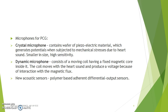While recording PCG, we use a microphone setup. The conversion of heart sounds into electrical signals can be done using a variety of transducers, primarily microphones. We classify microphones into two types. The first is the crystal microphone, which contains a wafer of piezoelectric material that generates potentials when subjected to mechanical stresses due to heart sound. It is very small in size but has high sensitivity. The second is the dynamic microphone, which consists of a moving coil with a fixed magnetic core inside. The coil moves with the heart sound and produces a voltage due to interaction with the magnetic flux.